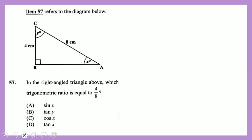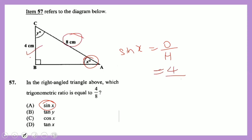Question 57: in a right-angled triangle, which trigonometric ratio equals 4 over 8? Testing sine x: sine = opposite over hypotenuse. The opposite side is 4 and the hypotenuse is 8, so sin x = 4/8.